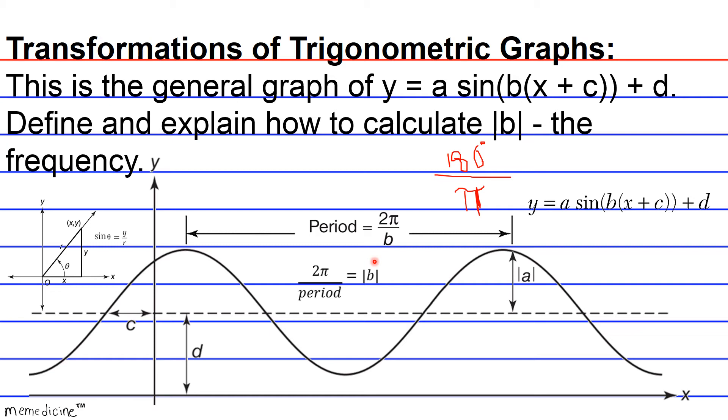So that's how you would calculate the frequency. And again, the definition is the number of complete cycles. This is one cycle. A period is one cycle on the interval from 0 radians to 2π radians or 0 degrees to 360 degrees.